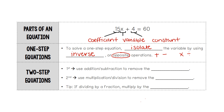For two-step equations, it means there's two steps. The first step is to use addition or subtraction to remove the constant. Then we use multiplication or division to remove the coefficient. If you are dividing by a fraction, you would multiply by the reciprocal, but we have the calculator to do most of that for us.